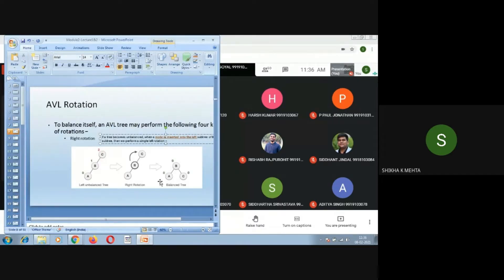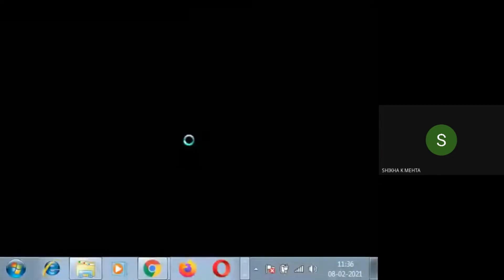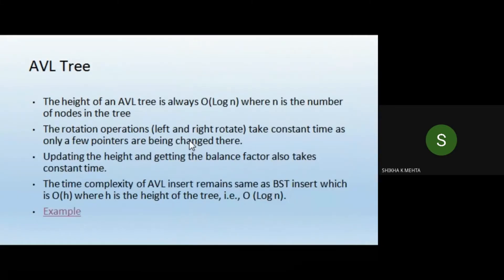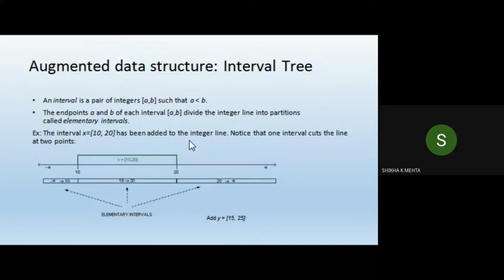For handling such problems we have augmented data structures, which are built on top of existing data structures. After augmentation, we try to retain the properties of the existing data structures. One augmented data structure we are going to study is the interval tree, which is based on the binary search tree but stores ranges in the nodes rather than just single keys.